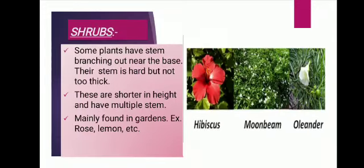Now, shrubs. Shrubs are medium-sized plants with a hard and woody stem branching out near the base, and they are less than three meters tall. Shrubs survive for many years but their lifespan is less than trees. Examples include henna, lemon, guava and hibiscus. They are found in gardens and are mainly used for decorative purposes.